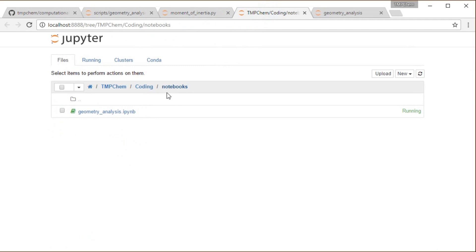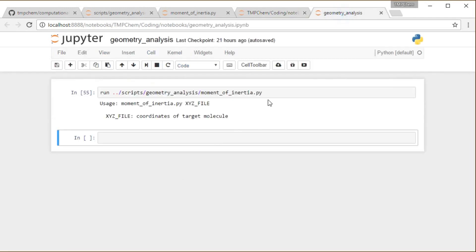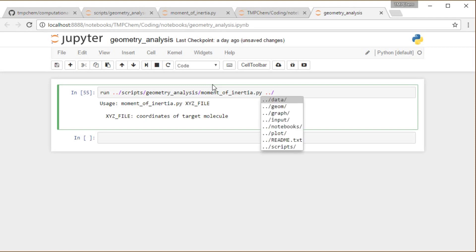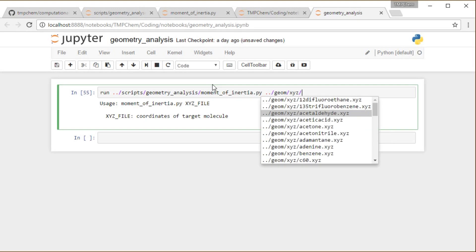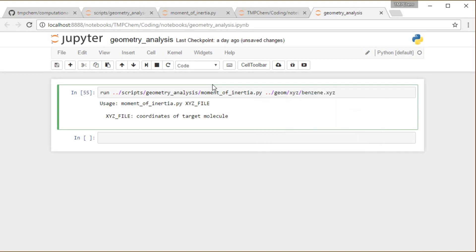Inside the notebook that we've been using throughout this entire chapter in the top directory slash notebooks, geometry analysis dot ipython. Without any arguments, it gives you the usage. I need to feed this an xyz file as an input argument. Why don't we compute the moment of inertia of benzene?